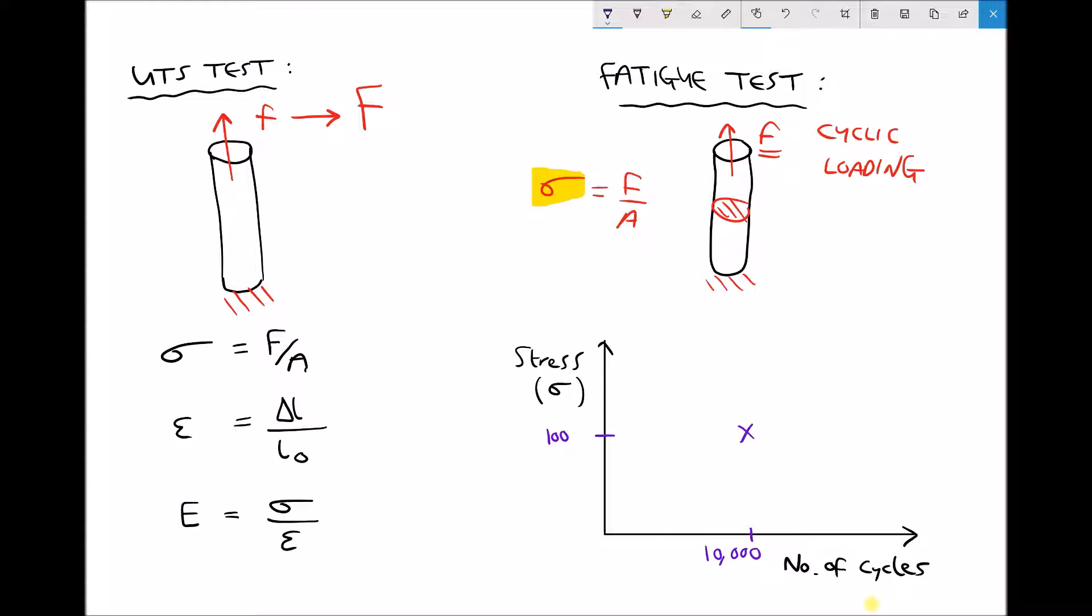What we would need to do is conduct this test a sufficient number of times until we could see a trend. So we might end up with a second data point down here, we might end up with a third data point here and so on. And over a number of different tests we would be able to see a trend in this data.